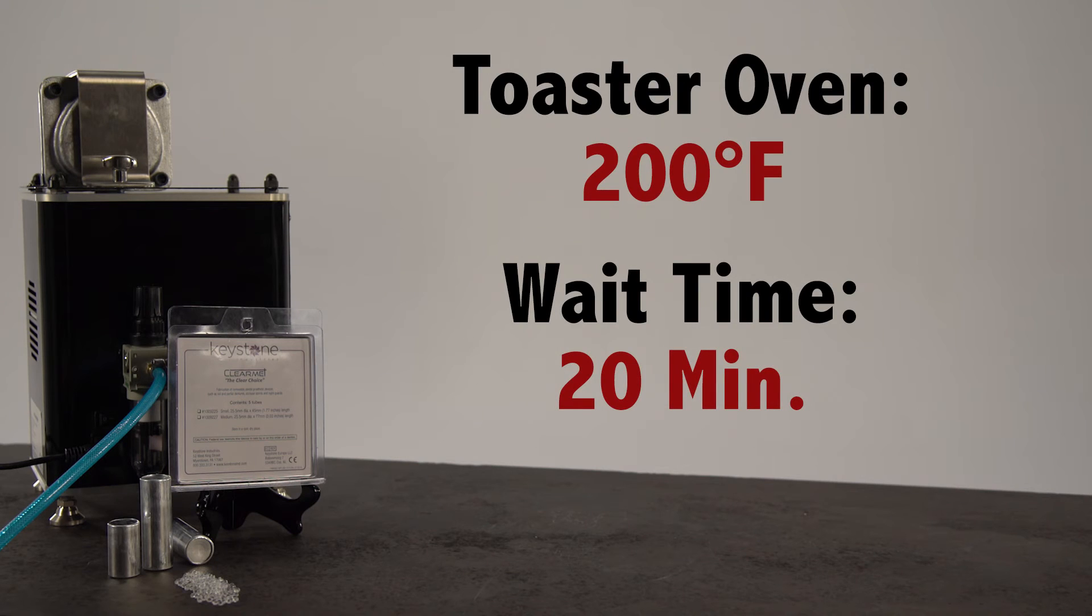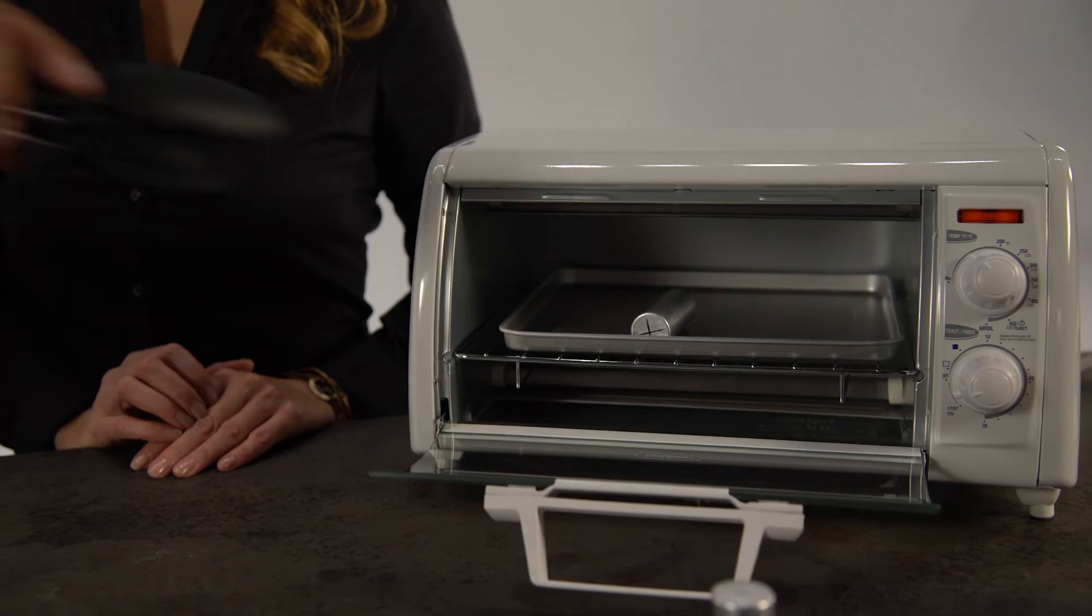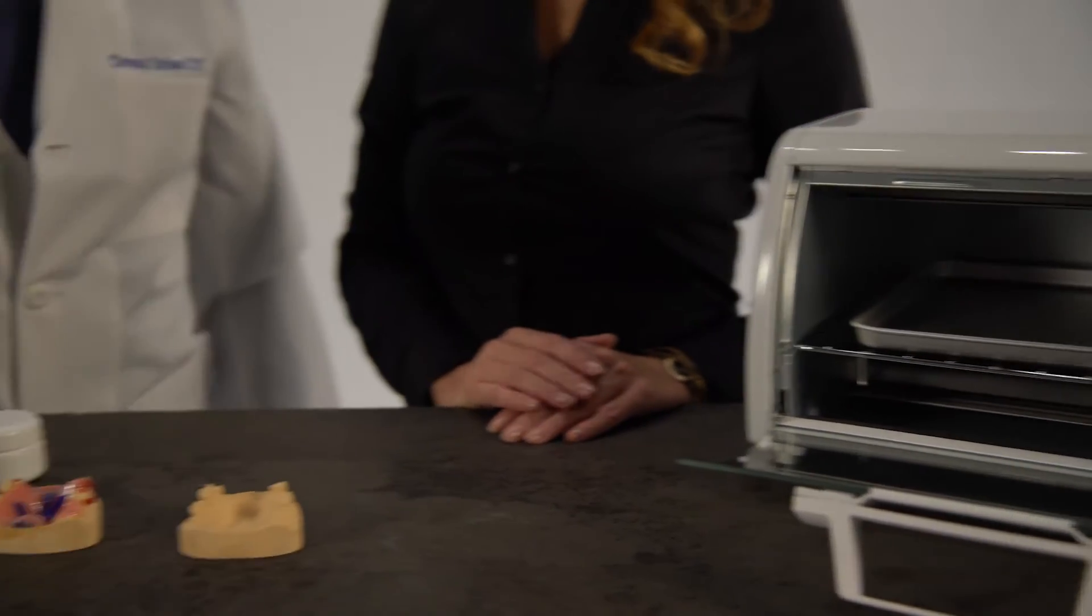The heating of the tube will remove any moisture that the clear mat material may have absorbed. When the alarm goes off on the FlexPress, the clear mat tube is ready to be placed in the injection unit.